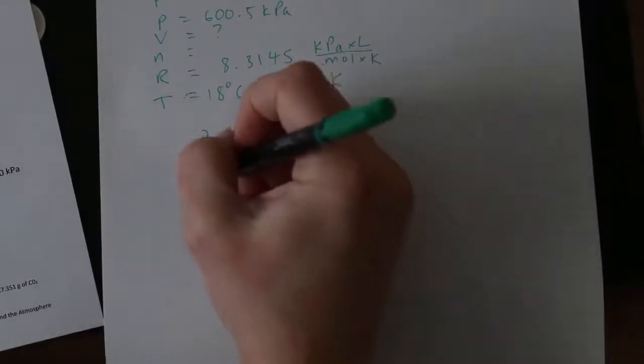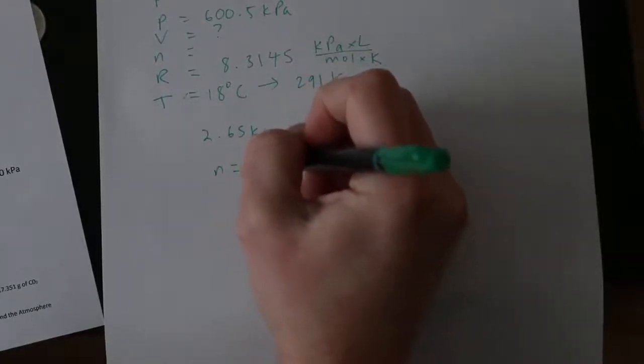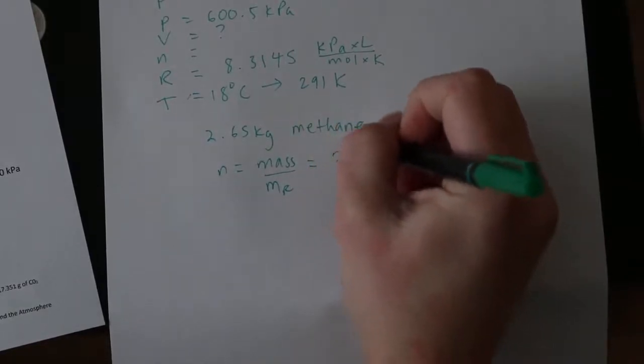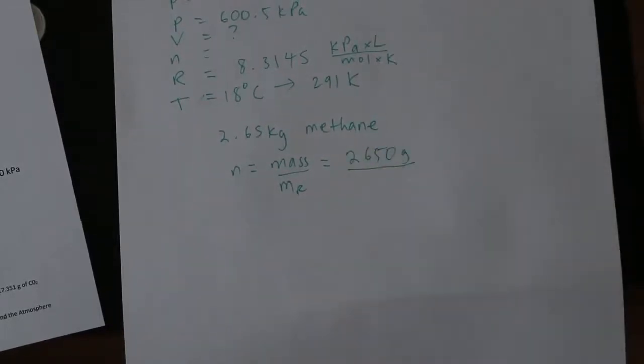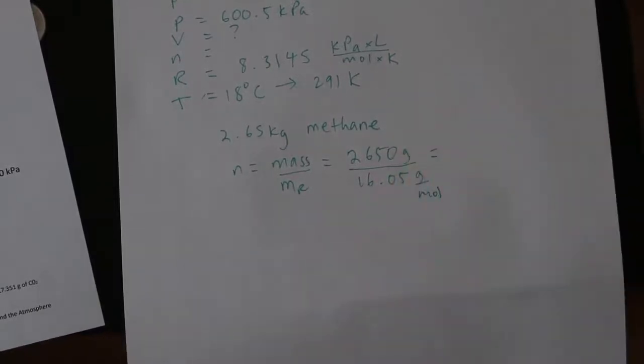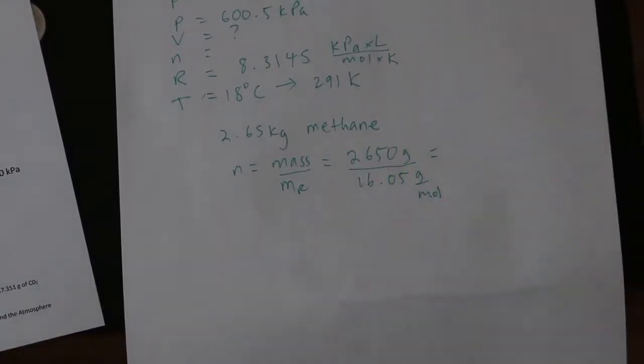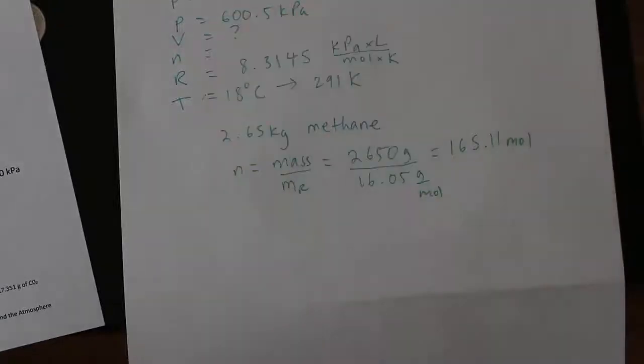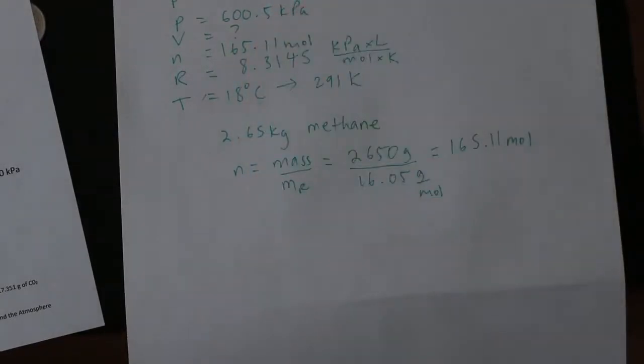So remember, N is going to be our number of moles of methane gas. So we have 2.65 kilograms of methane gas. So what we're going to do is we're going to have to, so remember, the number of moles is going to be mass divided by molar mass. So that's going to be 2,650 grams. And the molar mass of methane, that's going to be 12.01 plus 4 times 1.01, which is 16.05 grams per mole. So once we divide, 2650 divided by 16.05, that's going to give us 165.11 moles. So now we can fill in what N is. It's 165.11 moles.